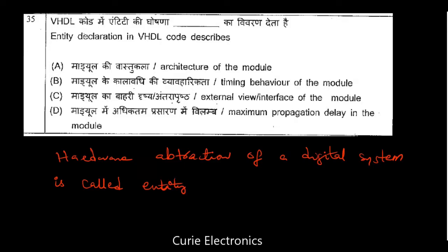So entity declaration in VHDL code describes the external view or interface of the module — that is, the input/output interface with the external world. That is what the entity declaration in VHDL code describes.